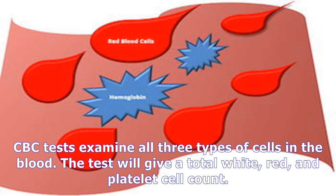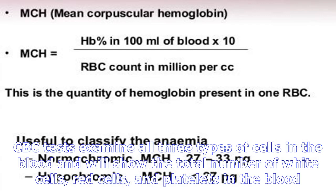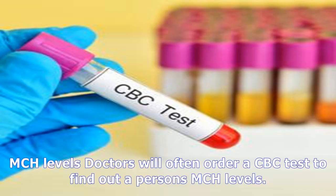CBC tests examine all three types of cells in the blood and will show the total number of white cells, red cells, and platelets in the blood.